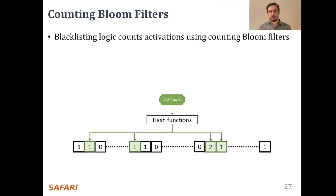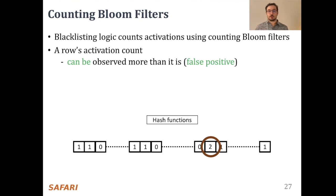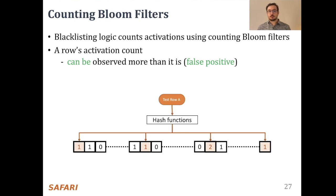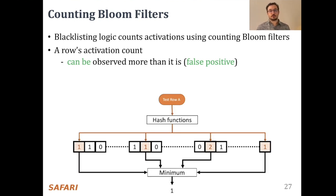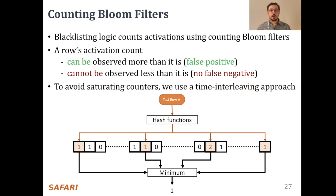Activating another row, say row B, increments another subset of counters. As shown here, a counter can be used for more than one row ID; therefore, a row's activation count can be observed as more than its actual value, leading to false positives. We estimate a row's activation count as the minimum value across all of its corresponding counters. These counters are never decremented; therefore, a row's activation count cannot be observed less than its actual value, hence there are no false negatives. Since the counters can saturate as they are never decremented, we periodically reset them without losing data by adopting a time-interleaving approach.